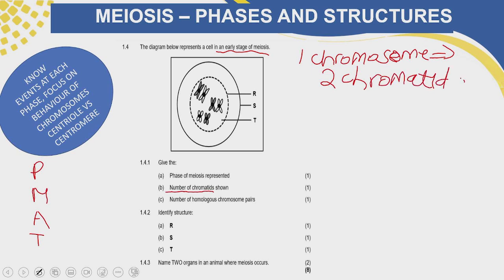If you go to your diagram, you will see there are six chromosomes — one, two, three, four, five, six. Now each of those chromosomes has two chromatids. So the total number of chromatids is 12, because we have six chromosomes. Next, it's asking for the number of homologous chromosome pairs — not the number of homologous chromosomes, but the number of pairs.